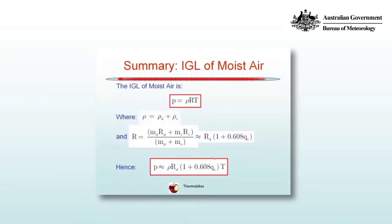So instead, let's write out the ideal gas law for moist air, P equals rho RT, where the density is the combined density, and the mixing ratio R, as is written as before, RD multiplied by 1 plus 0.608 QV.